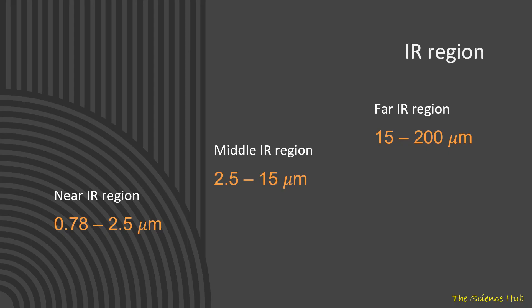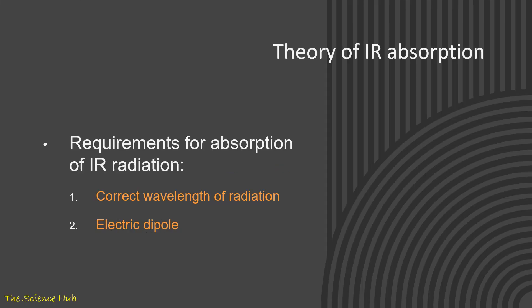We can classify the IR region generally into three parts: near IR region, 0.78 to 2.5 micrometer; middle IR region, 2.5 to 15 micrometer; and far IR region, 15 to 200 micrometer. Now we come to the theory of IR absorption.